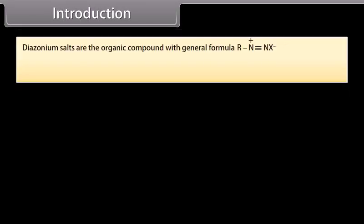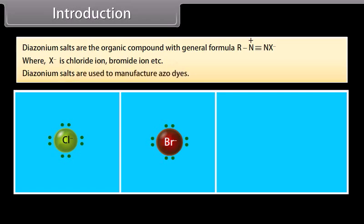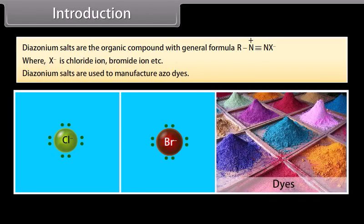Diazonium salts are organic compounds with general formula RN2⁺X⁻, where X⁻ is chloride ion, bromide ion, etc. Diazonium salts are used to manufacture azo dyes. In this lesson, we will learn more about amines and diazonium salts.